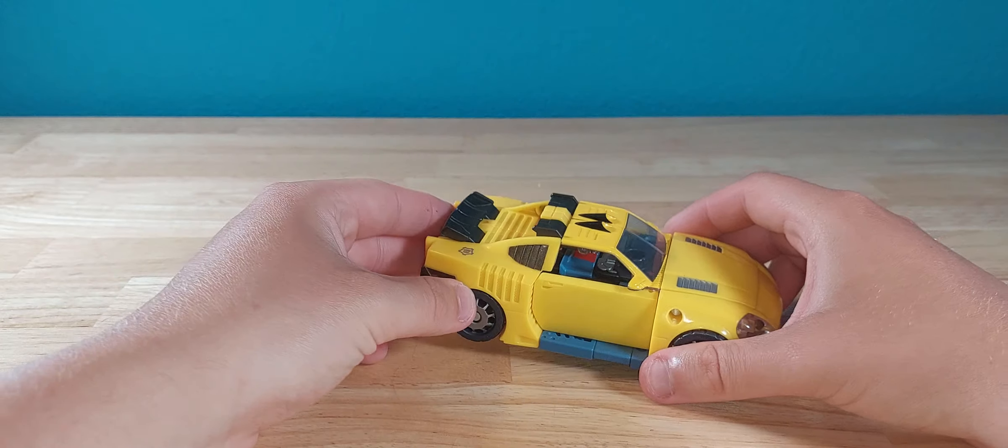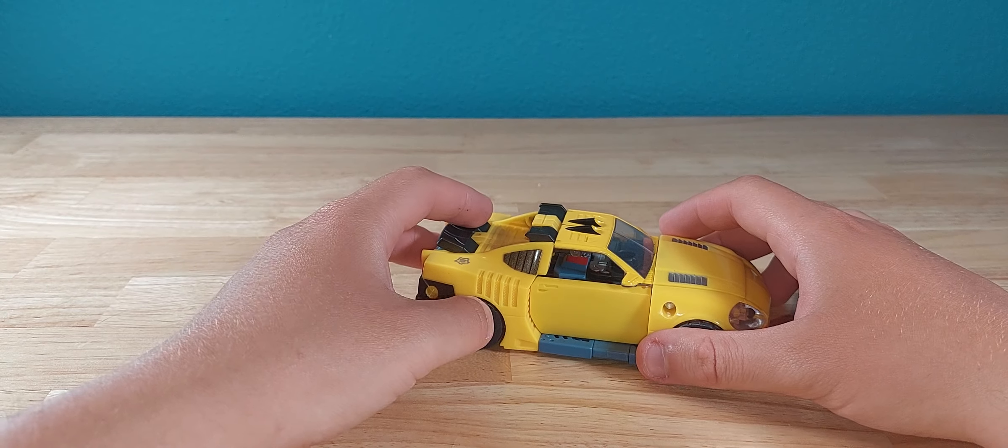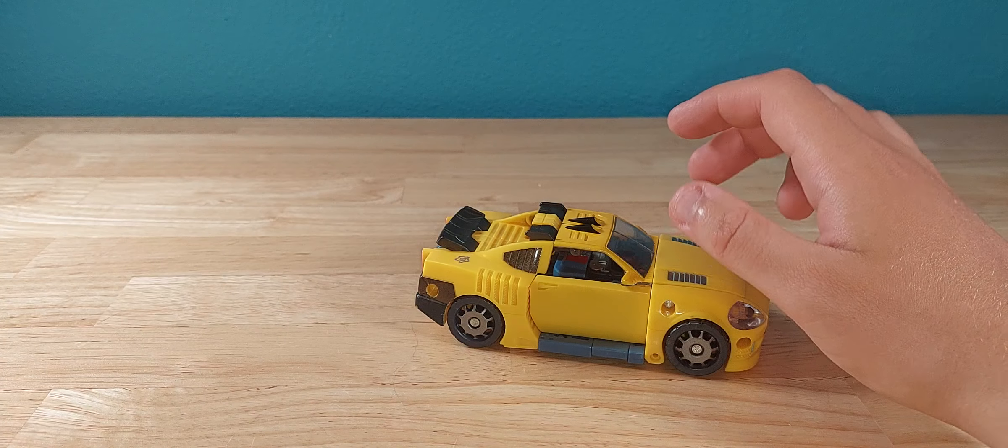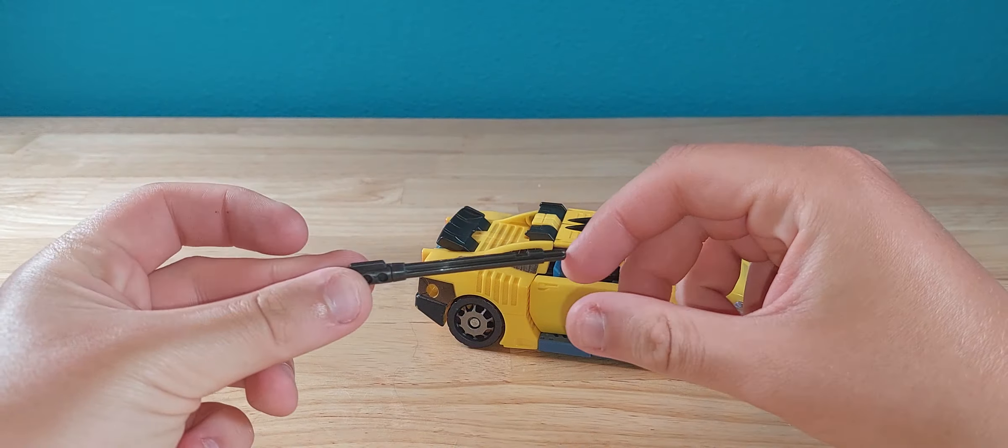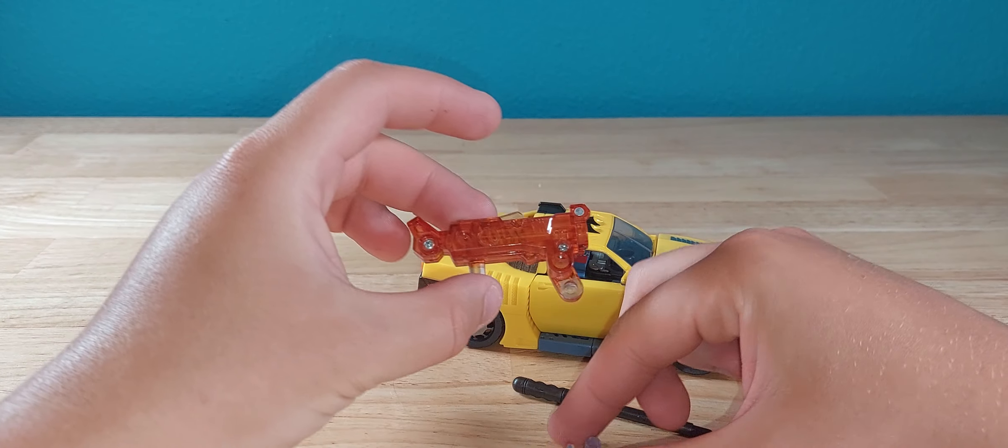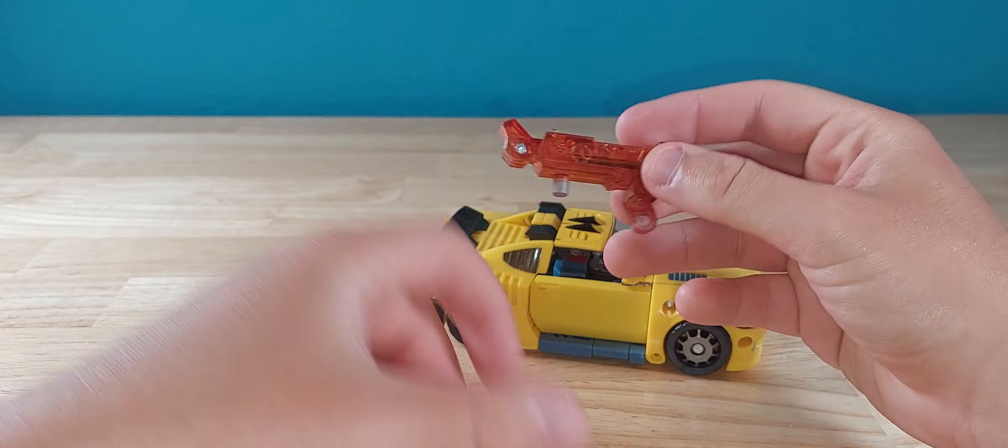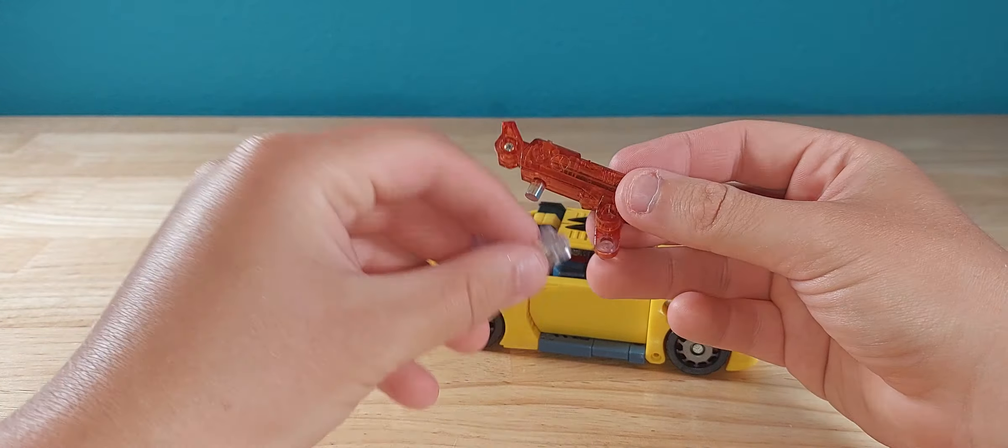Not too bad. Now as far as accessories, he has three. Technically he comes with a missile, he comes with whatever this is supposed to be, and his actual gun. You just want to go ahead and put the missile in, and this kind of does whatever you want it to do. I'm thinking some sort of radar.